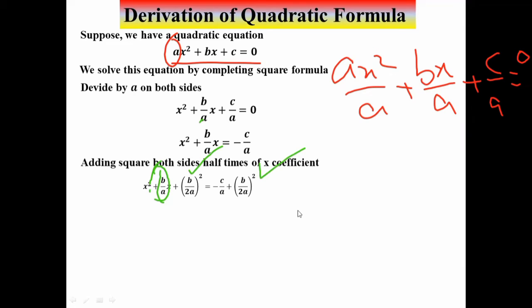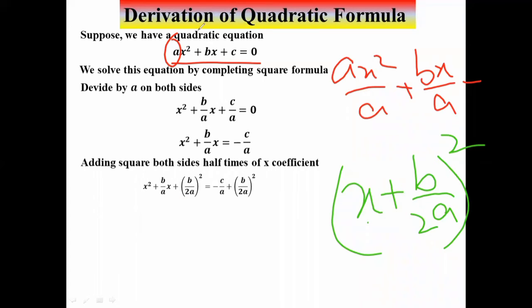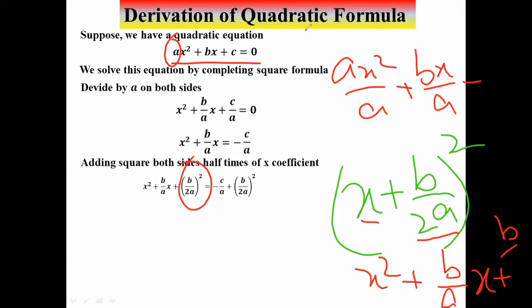I take the square of b/2a and add it to both sides. The right side now allows the left side to become the complete square: (x + b/2a)². Let me verify — opening this formula gives x² + 2·x·(b/2a) + (b/2a)², where the 2's cancel to give (b/a)x, confirming it matches our equation.